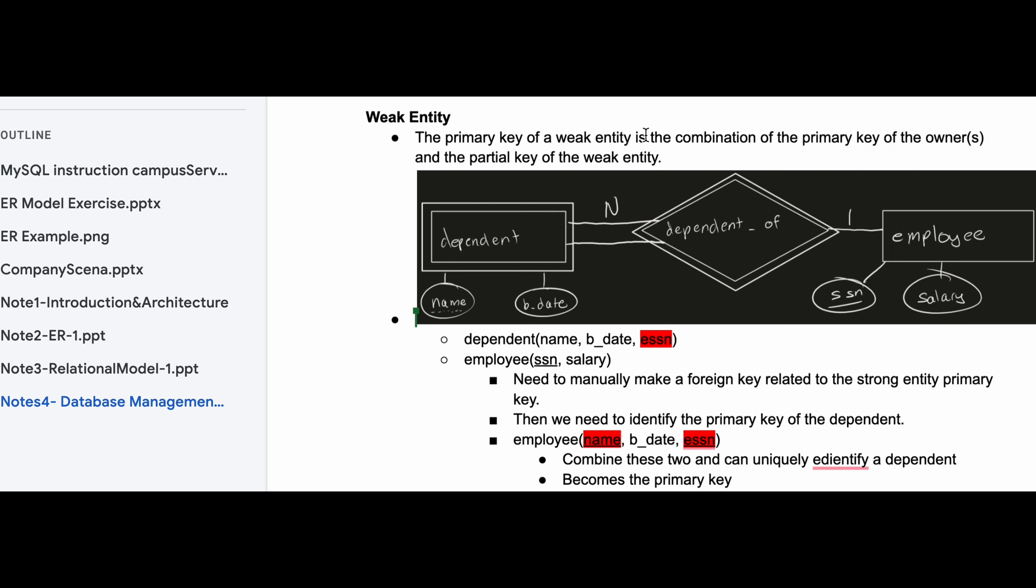Remember that whenever we have a weak entity like this dependent right here, we have to have an actual entity, and that's going to be this employee for this example. There's going to be a relationship in between them and this relationship is going to depend on this primary entity right here.